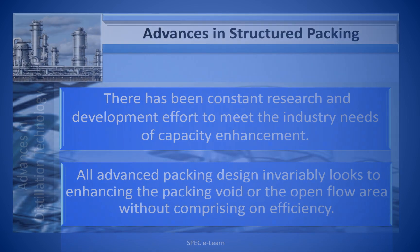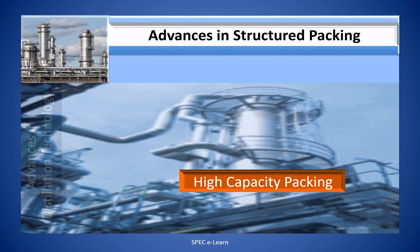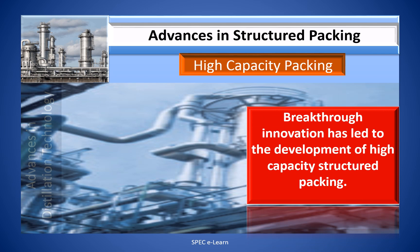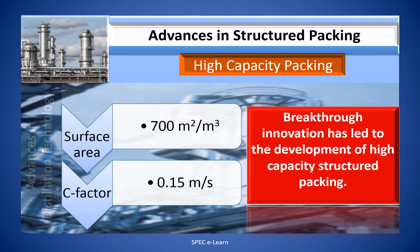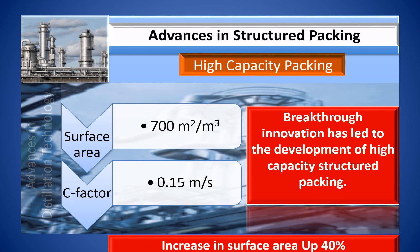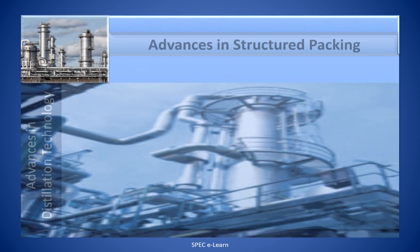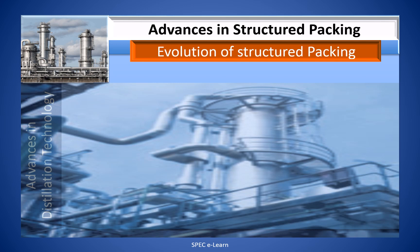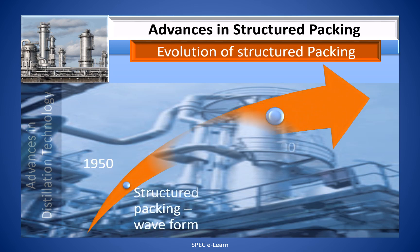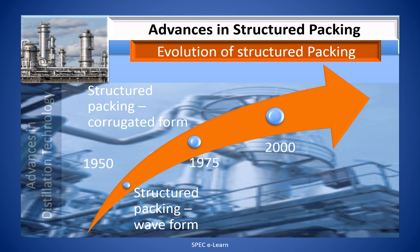There has been constant research and development effort to meet industry needs of capacity enhancement. All advanced packing designs look to enhancing the packing void or open flow area without compromising efficiency. Breakthrough innovation has led to the development of high-capacity structured packing, characterized by high surface area up to 700 square meters per cubic meter and C-factor up to 0.15 meters per second. This slide illustrates how structured packing has evolved: waveform in 1950, corrugated form in 1975, and high-capacity packing in the early 2000s.